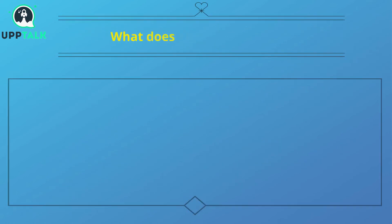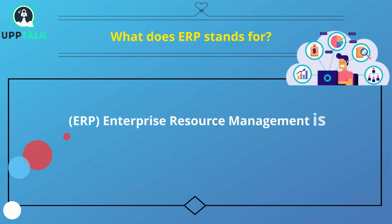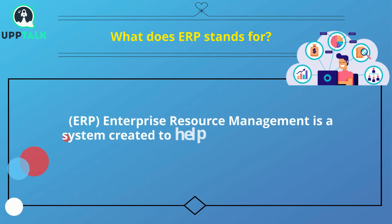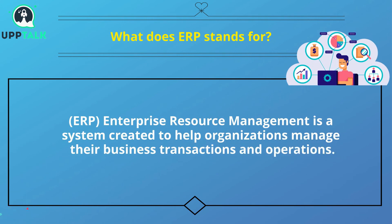What does ERP stand for? ERP, Enterprise Resource Planning, is a system created to help organizations manage their business transactions and operations.